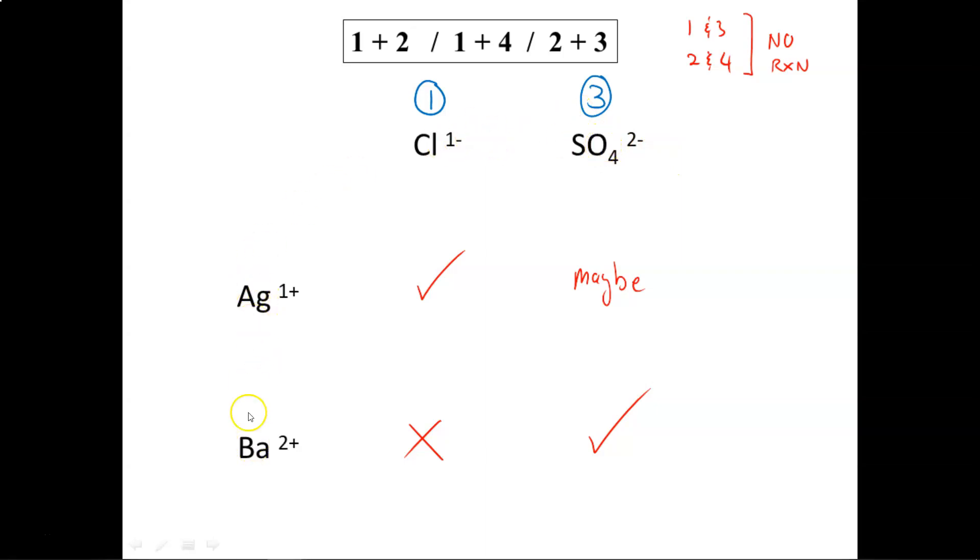That means silver and barium must be 2 and 4. Now which one is which? I don't know, so let's just randomly pick one: 2 and 4. Now let's see if this matches with the data. 1 and 2 should make a precipitate. 1 and 2 does make a precipitate. 1 and 4 should make a precipitate. 1 and 4 should make a precipitate, but it did not, so therefore my numbering system is incorrect.